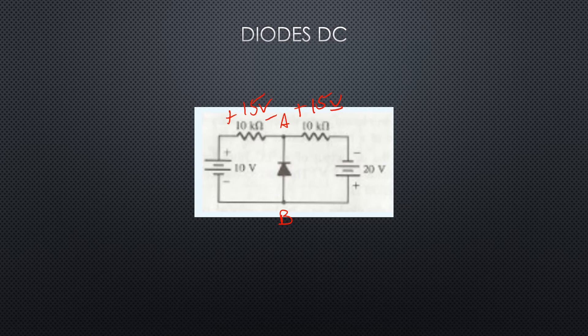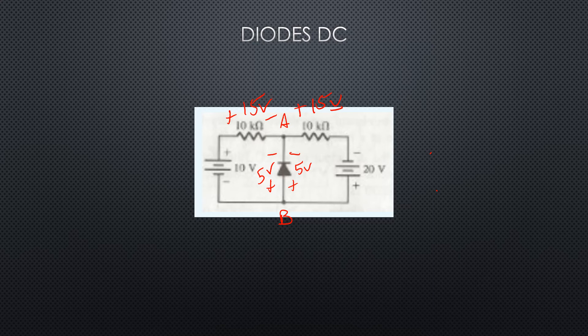That doesn't tell us what A to B is, so we do a Kirchhoff loop from point A to B. Going left we get minus 15 plus 10, giving minus 5 volts. Going right we get plus 15 minus 20, also giving minus 5 volts. Now the anode is positively biased with respect to the cathode, so the diode is in fact forward biased. We erase the open-circuit values and write in 0.7 volts for that forward-biased diode.